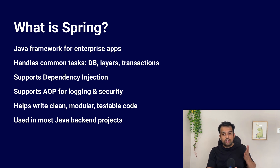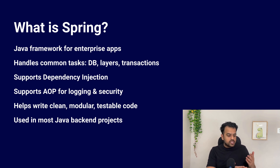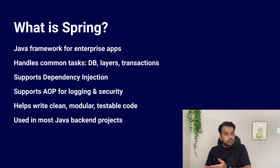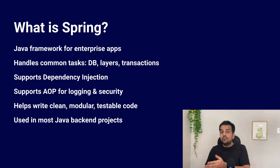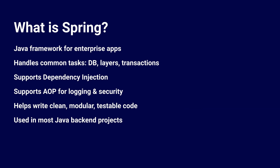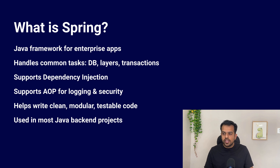Spring takes care of a lot of technical details in the background, so as a developer you can focus more on writing the business logic. Spring also provides support for dependency injection — Spring will create objects for you and inject them whenever you need them. It also supports features like Aspect Oriented Programming (AOP), which is extremely important for logging and security, used for cross-cutting concerns. Spring keeps code clean, modular, and testable, and is widely used in the industry for almost every Java backend project.